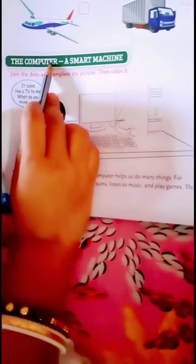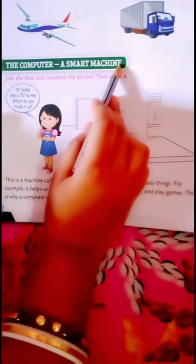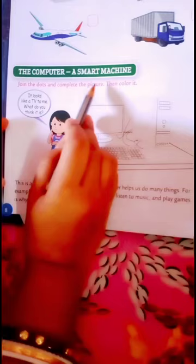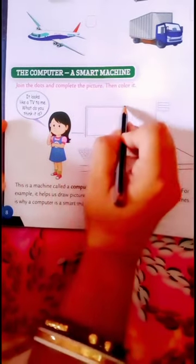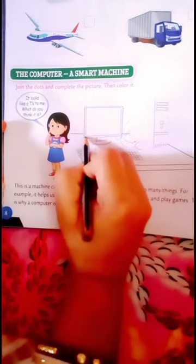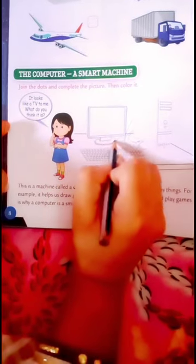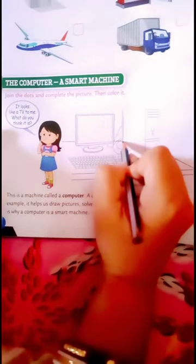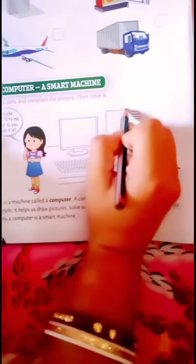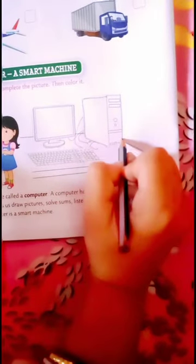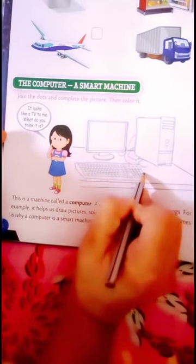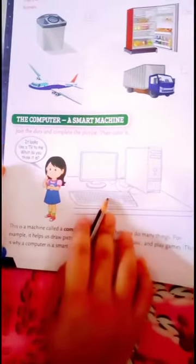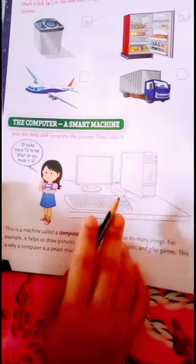Next, the computer, a smart machine. Join the dots and complete the picture, then color it. So children, take your pencil in your hand and join the dots like this. Once you are done, you will see what the image is. So here we join it. And what do you think? What does it look like? It is a computer, a smart machine.